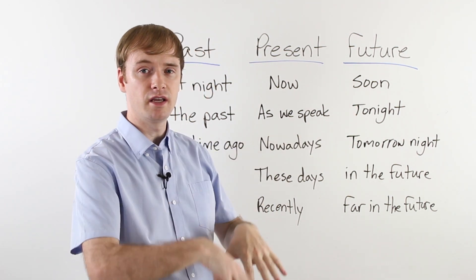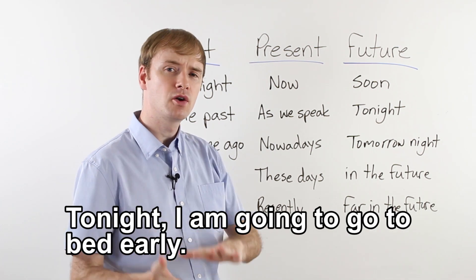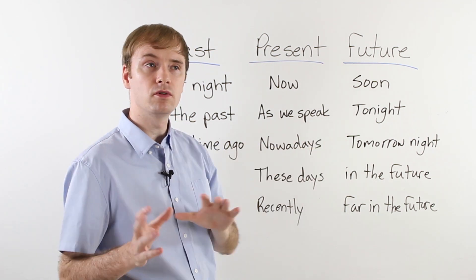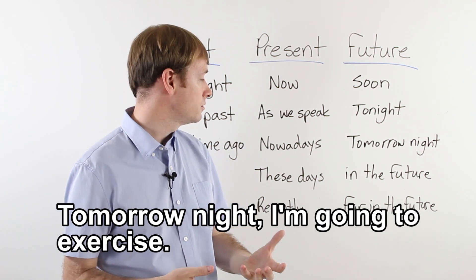But I'm getting married soon. Or I'm going to eat dinner soon. I'm going to use it like that. Don't use coming soon too much. Tonight. I'm going to have a good dinner. Tonight, I'm going to go to bed early. Tomorrow night. Tomorrow night, I have to meet my friends. Tomorrow night, I'm going to exercise.